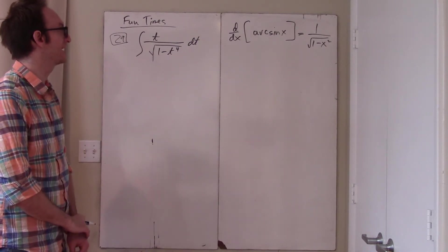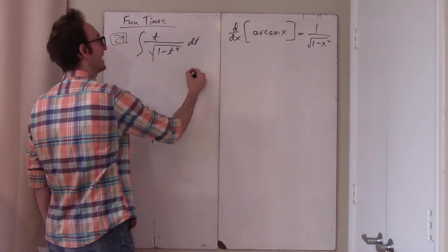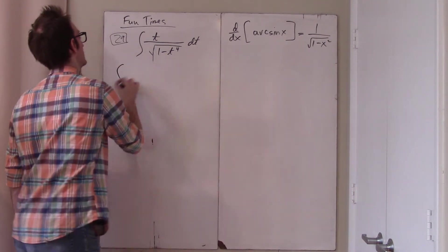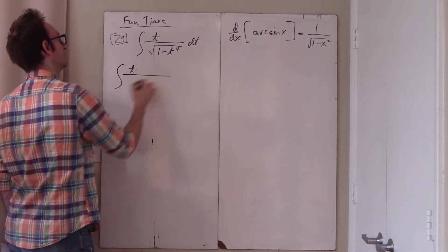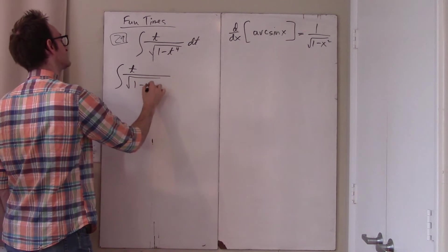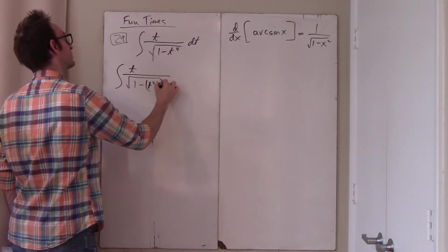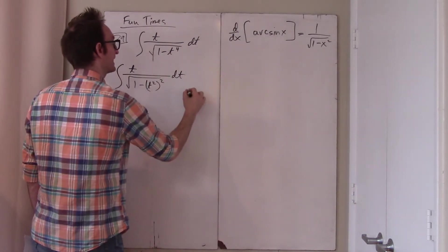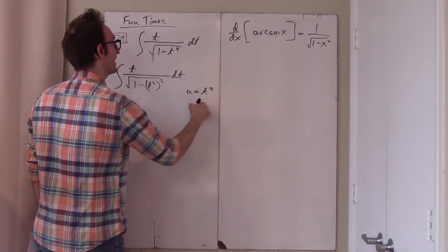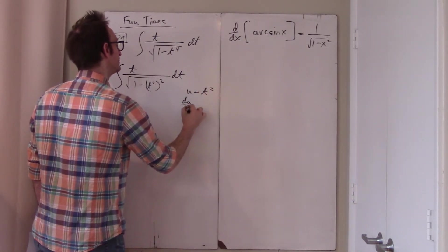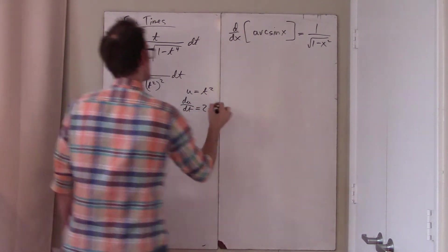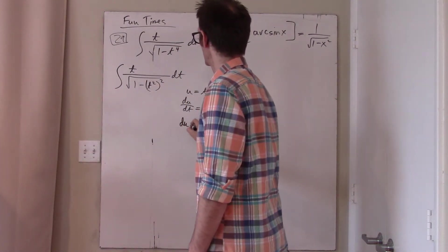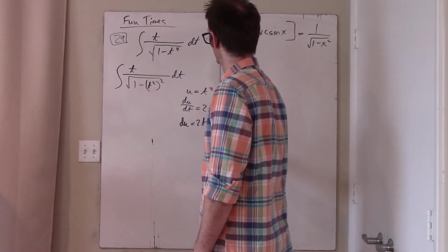Does this look like that? Yeah, it really does. What I now want to do is think of this as T over root 1 minus T squared squared. That means I can let U be T squared. D U D T is 2 T, and so D U is 2 T D T.